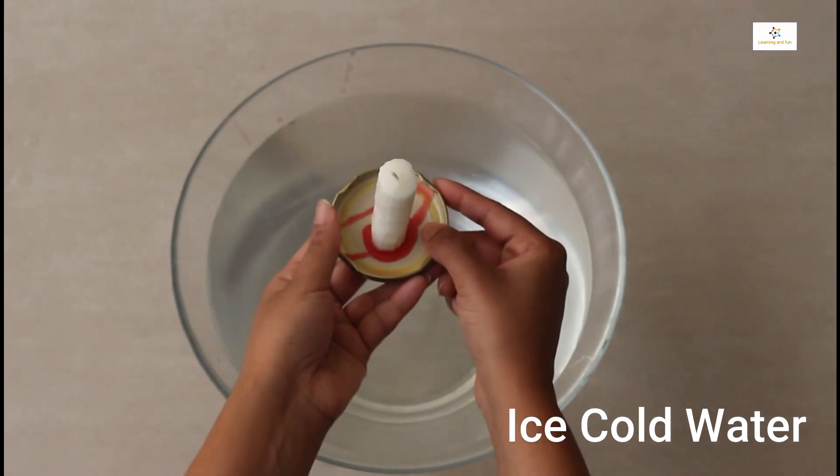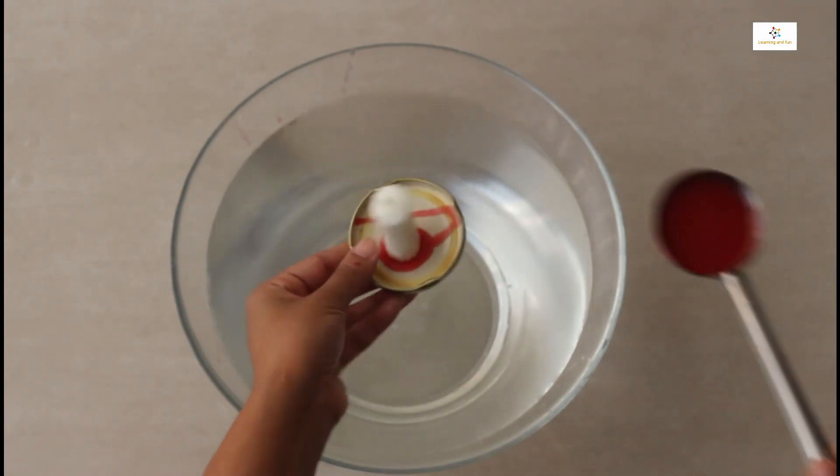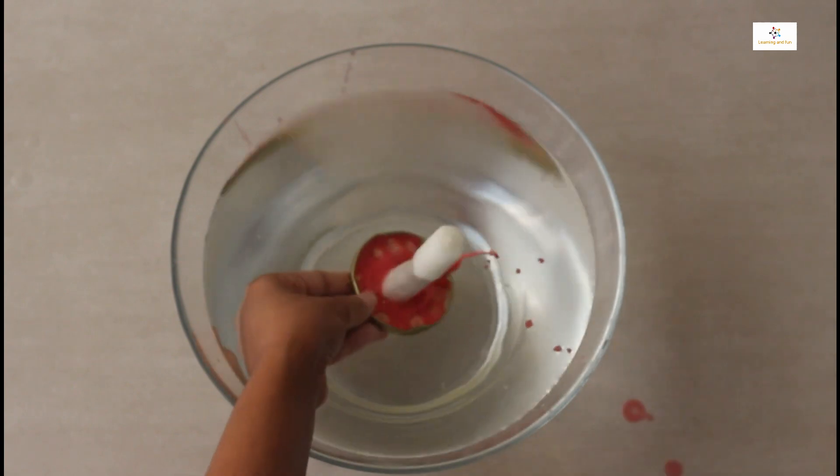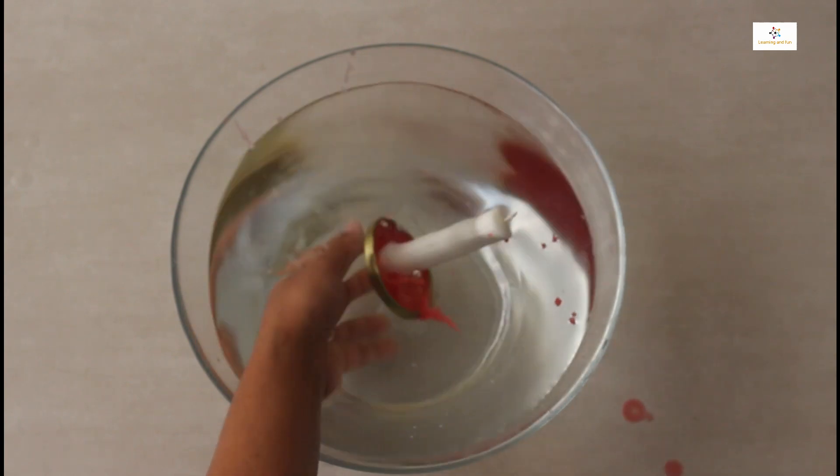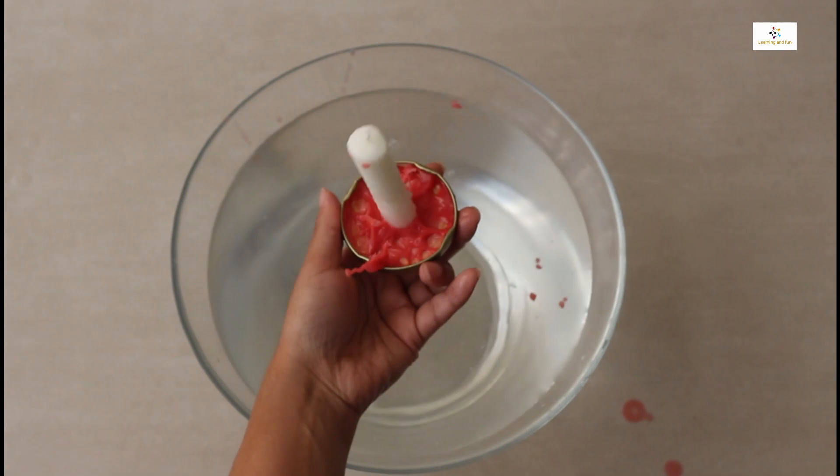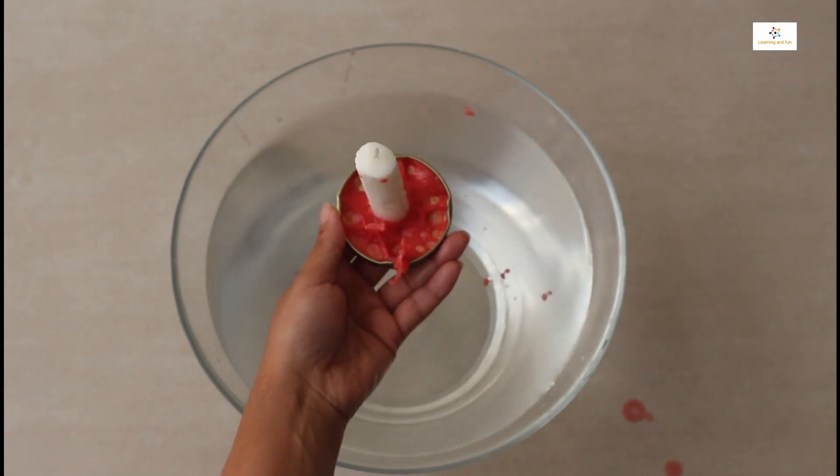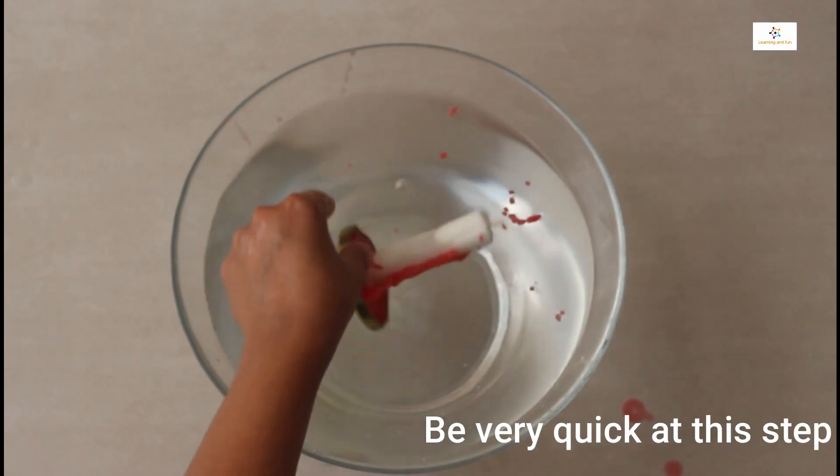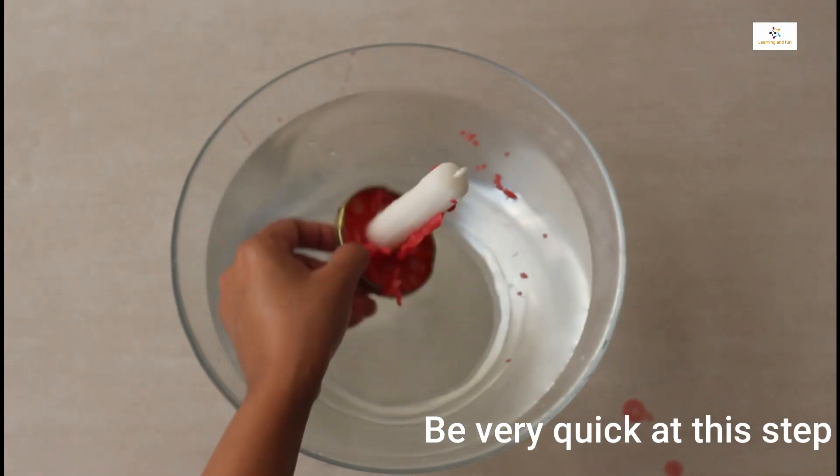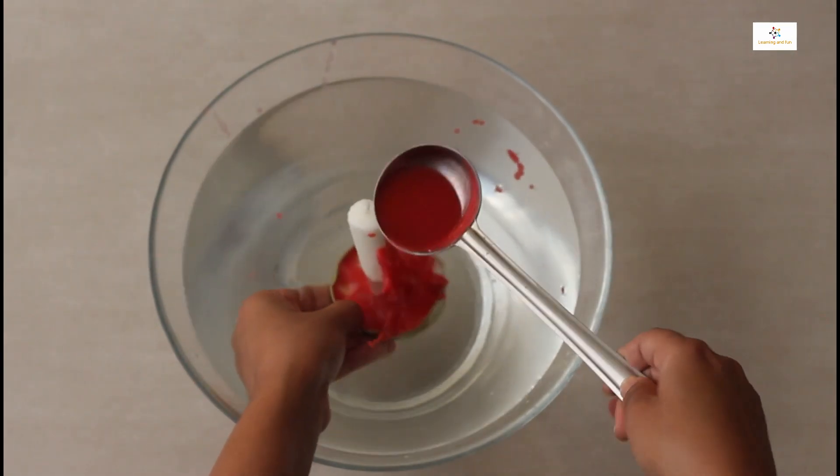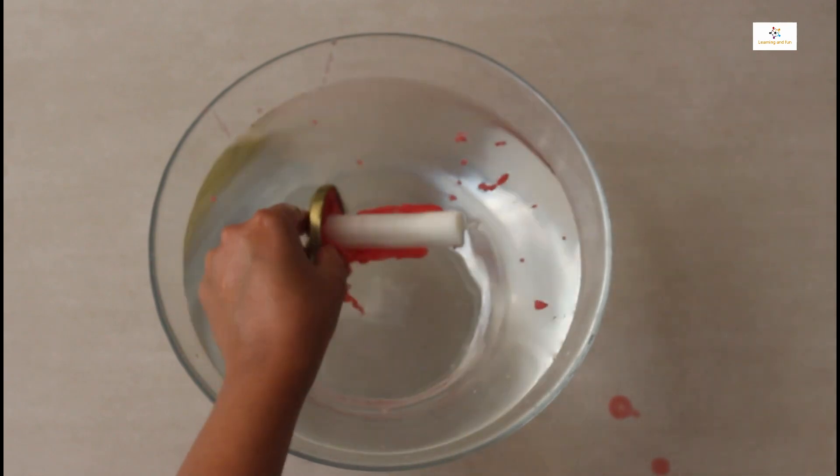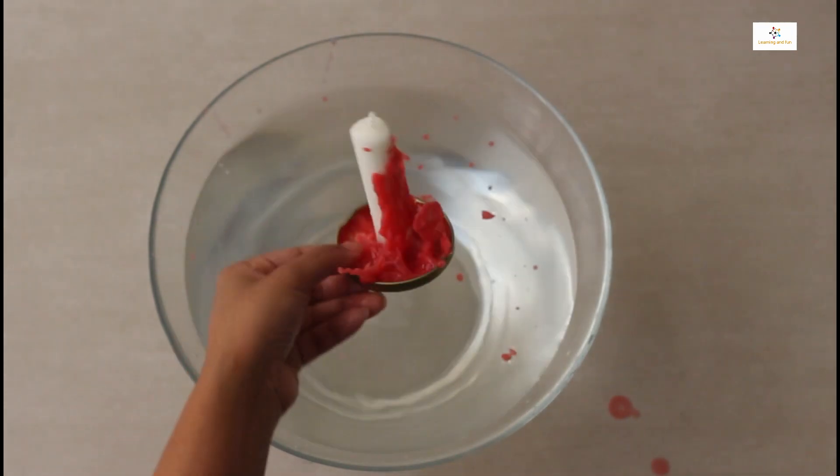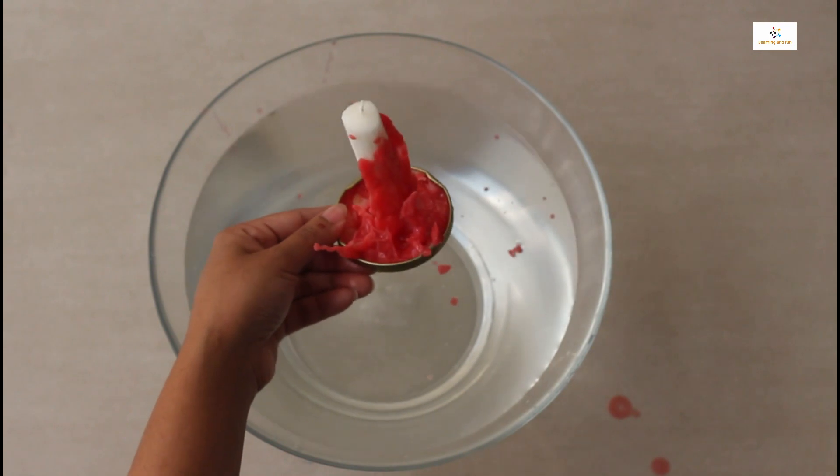Now just have a look. First we have to pour hot wax onto the lid and put it into the water so that it will take a desired shape. Make sure to be quick while doing this step. Again I'm following the same step. I'm pouring the wax again and just putting the lid into the water.